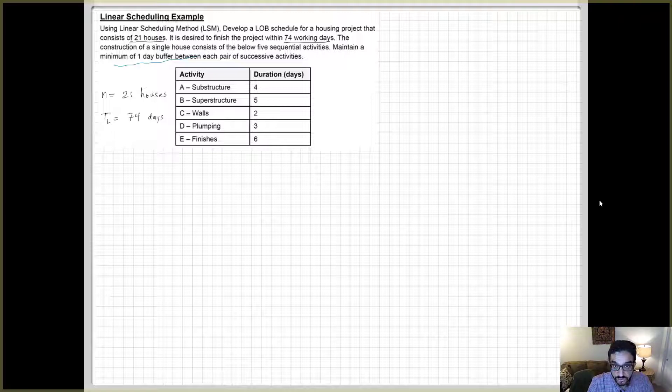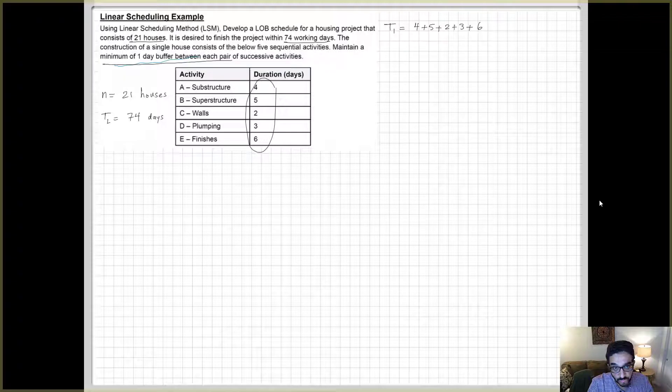Like we learned in the lecture, we first need to calculate what we call T1. T1 would be the total CPM duration of one unit, how long one unit would take. So we have five activities, we add the durations, and most people do that and they forget about the buffer between these activities. You have five activities, so there are four buffers between them. So total now, each unit, if you do these activities back-to-back with the buffers, it will take 24 days.